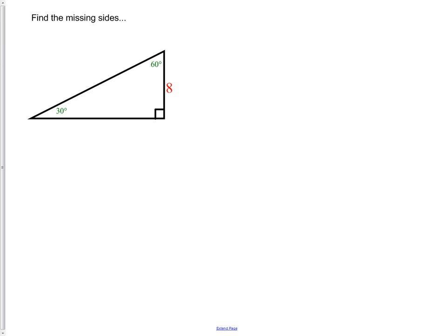So let's put in the values. On this side, it's the 2n side so that makes this side 16. The base is the n root 3 side. That makes the base 8 root 3. We have all of our measurements.